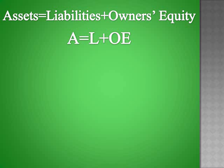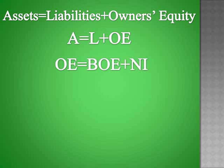Now assets and liabilities can't really be expanded out, but owner's equity can. Here you see that owner's equity equals beginning owner's equity plus any net income. And net income can also be expanded out further.